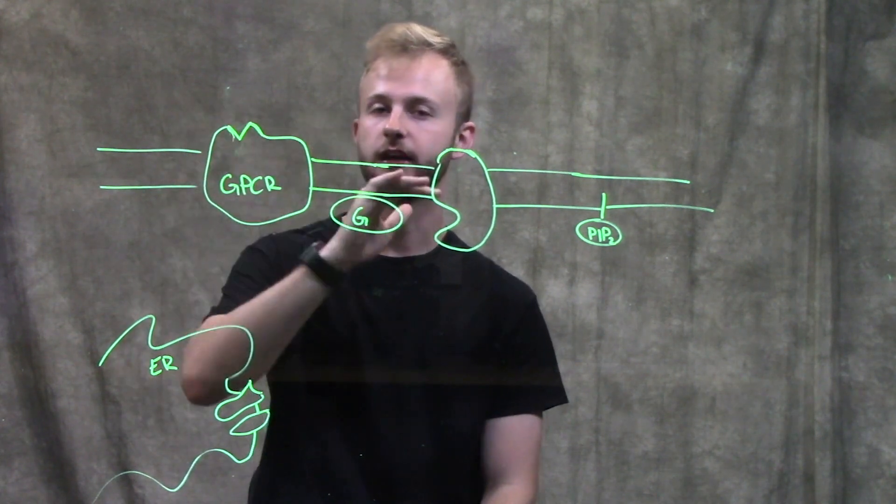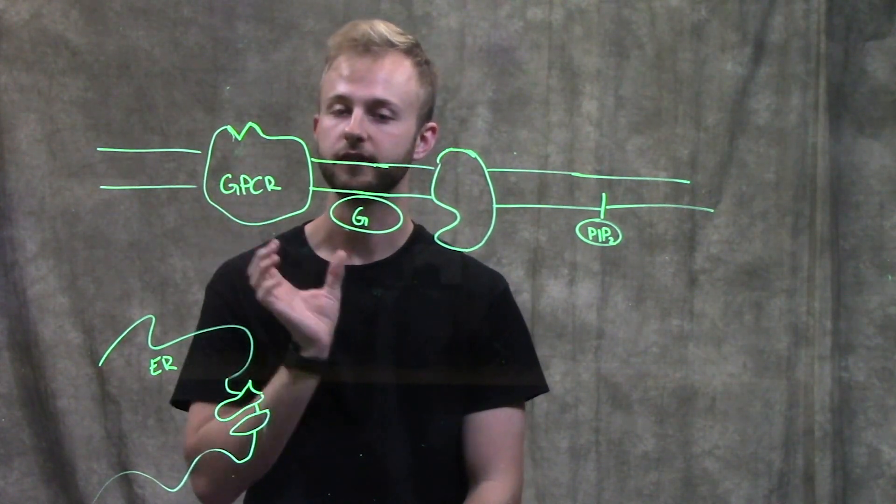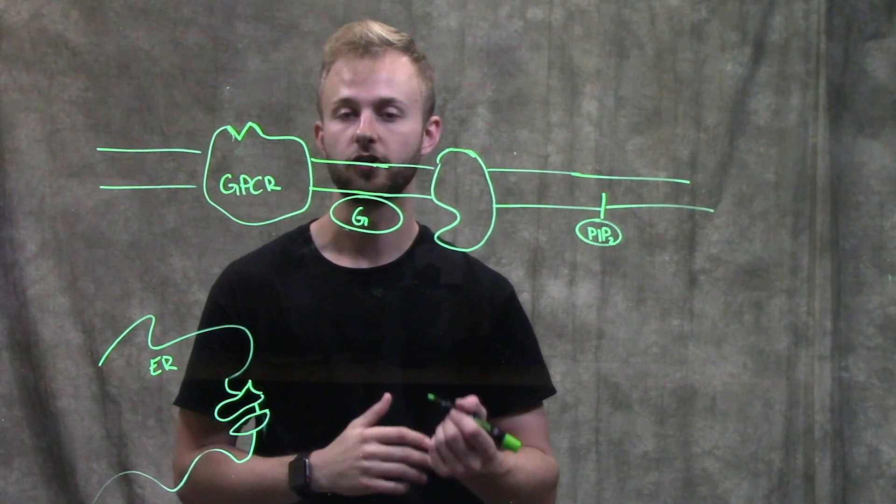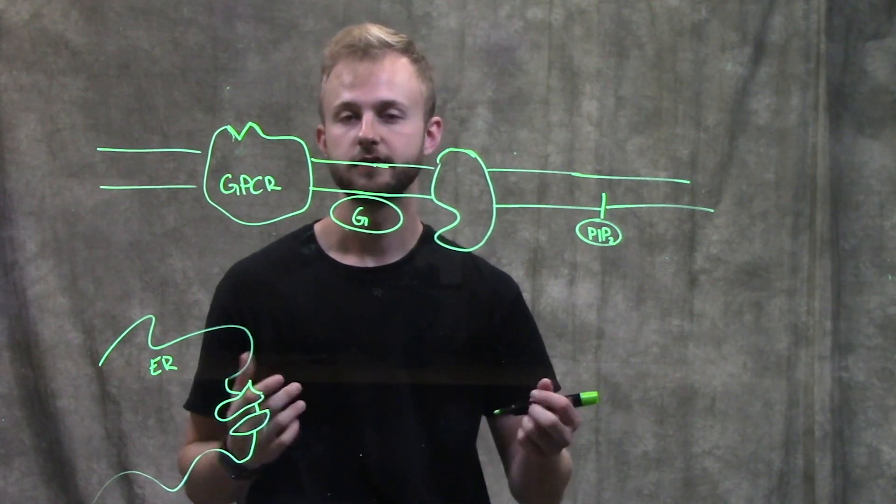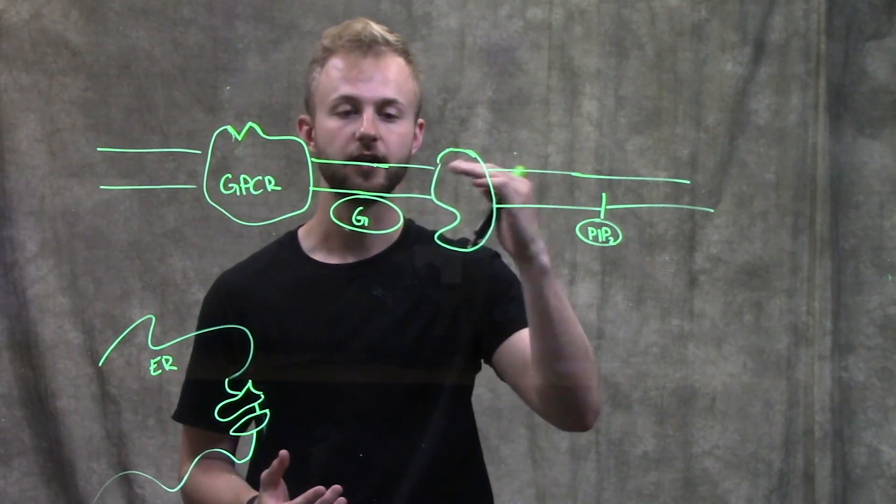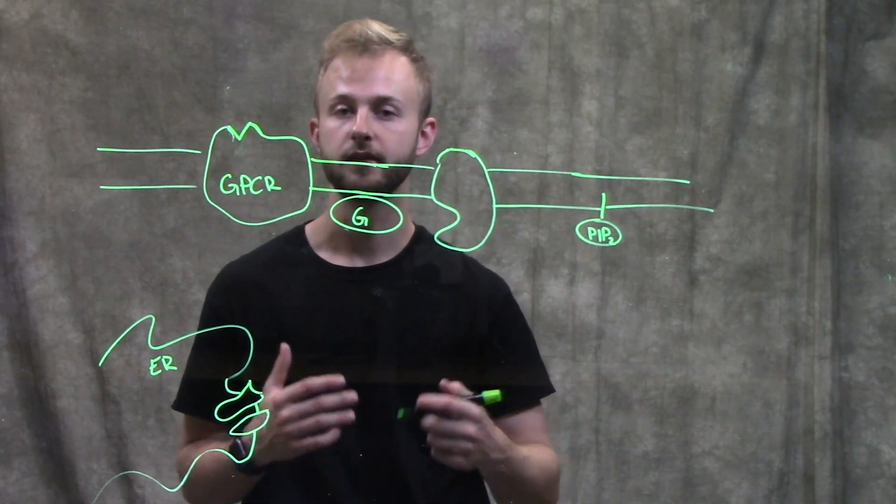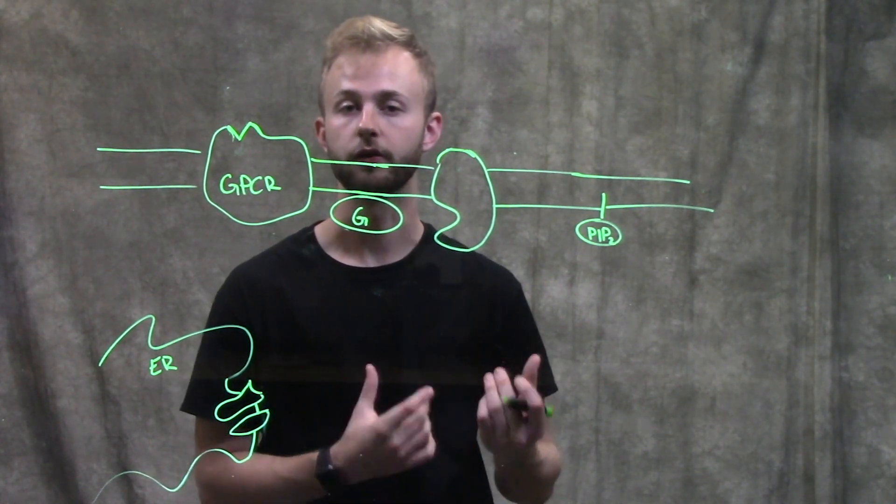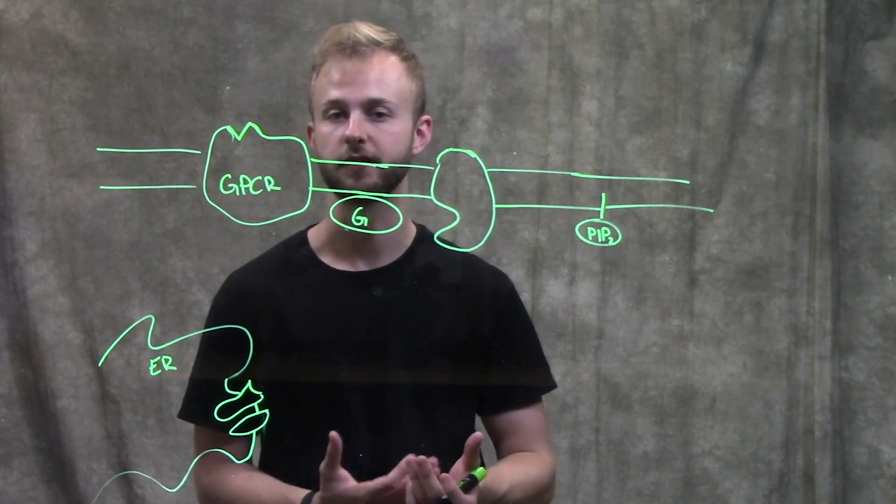Whenever our ligand binds to the extracellular domains of these receptors, we call that ligand our primary messenger. But since that primary messenger can't actually get across the membrane onto the inside of the cell, we need something else to do more work for us, and those are going to be our second messengers.